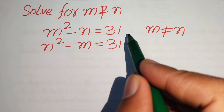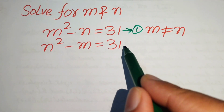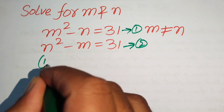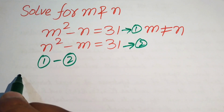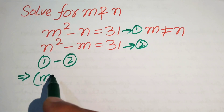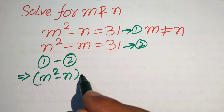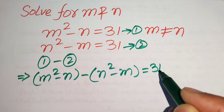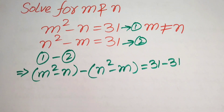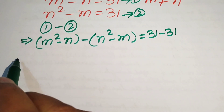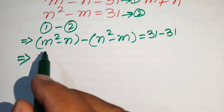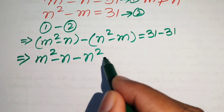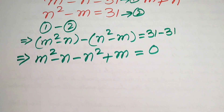The first step is to label these as equation number one and equation number two, and then subtract equation two from equation one. When we subtract, we get m squared minus n minus n squared plus m equals zero.